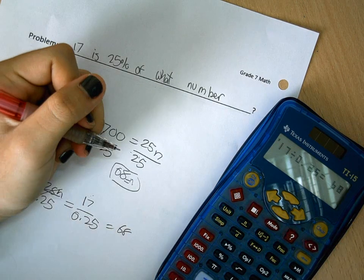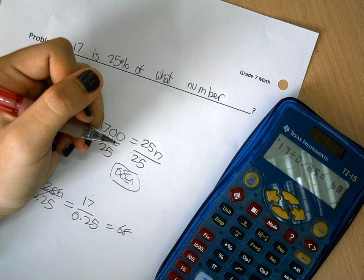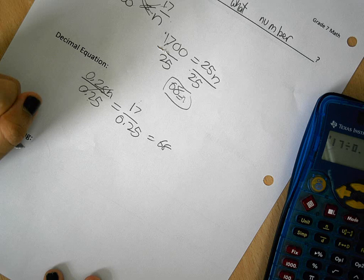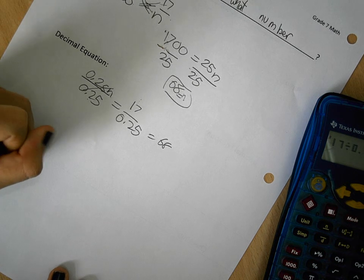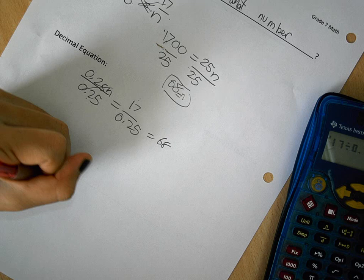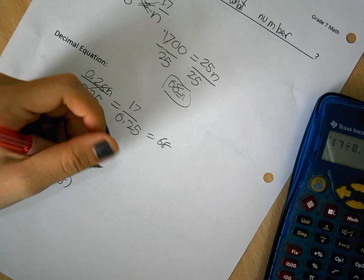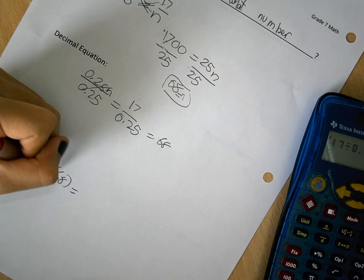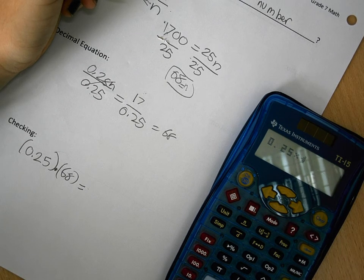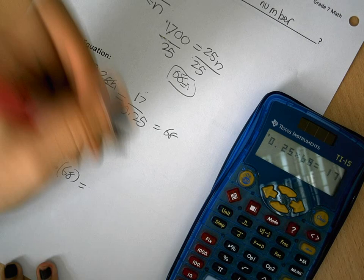So now, if you want to check your answer, if it's right or not, you're going to take the decimal right here, which is 0.25 multiplied by 68. And then you're going to multiply each other, so 0.25 multiplied by 68, which is 17.